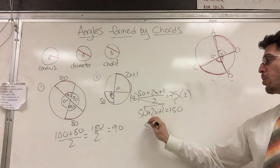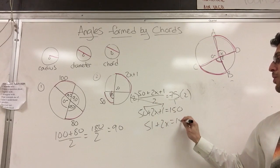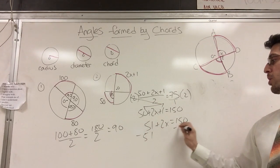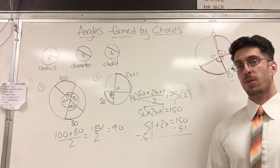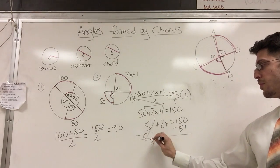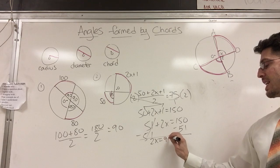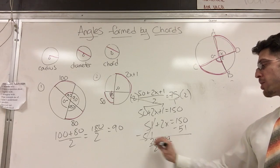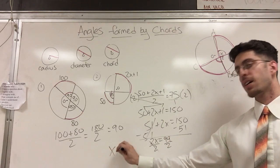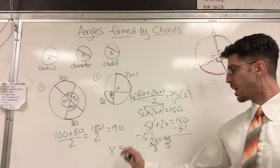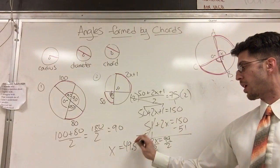Equals 150 drops down. 50 plus 1 is 51 plus 2x equals 150. Subtract 51. Subtract 51. What do you got? 2x equals 99. Divide by 2. Divide by 2. And x equals 49.5.